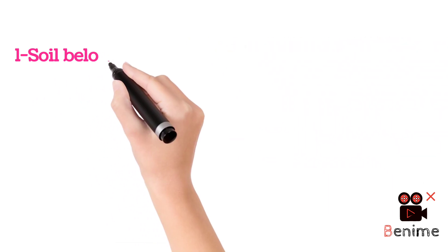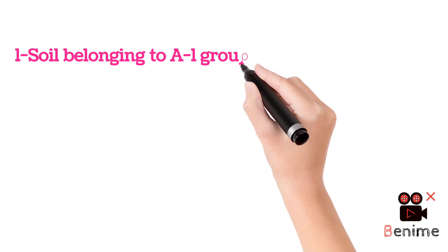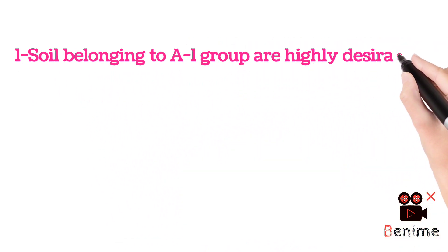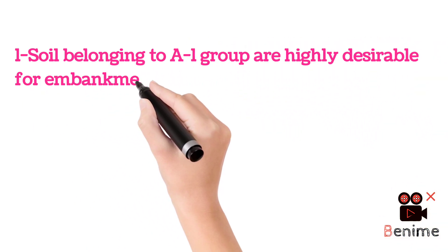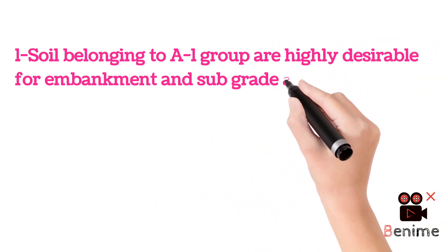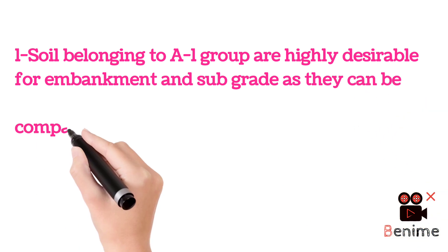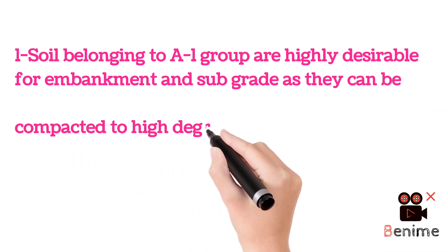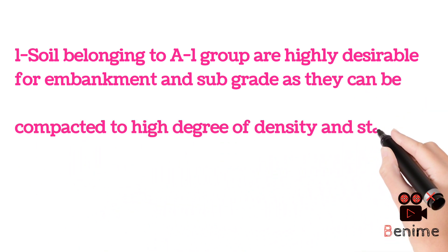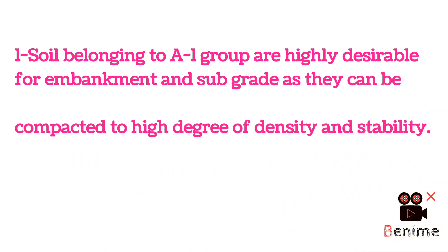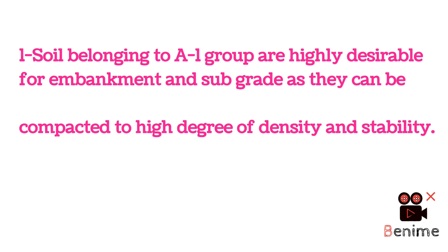Point 1: Soils belonging to the A1 group are highly desirable for embankment and subgrade, as they can be compacted to a high degree of density and stability.